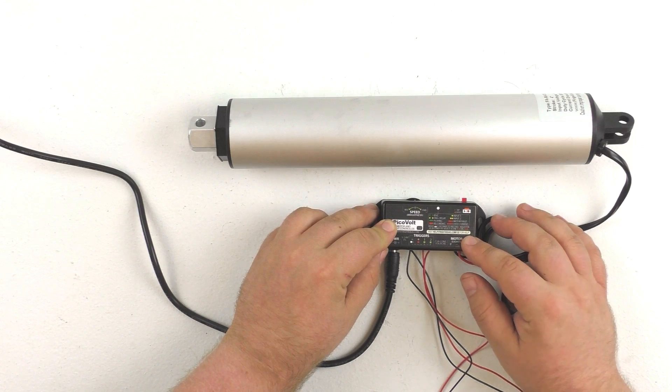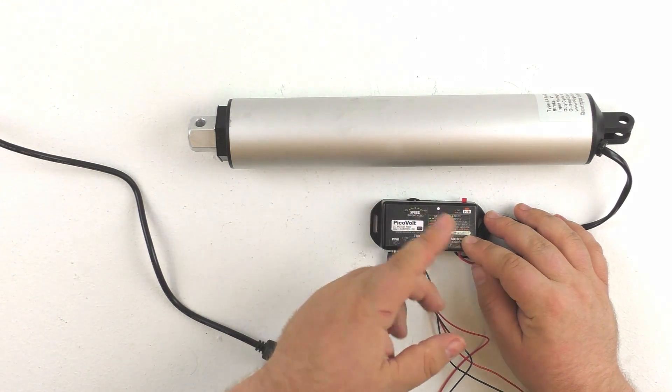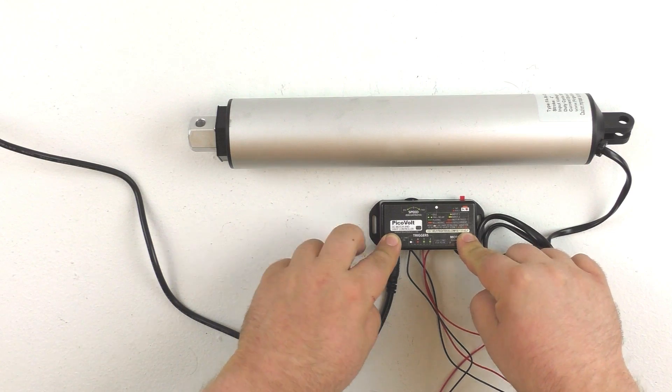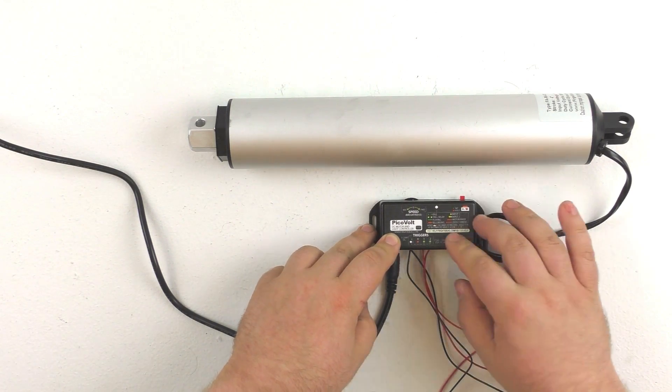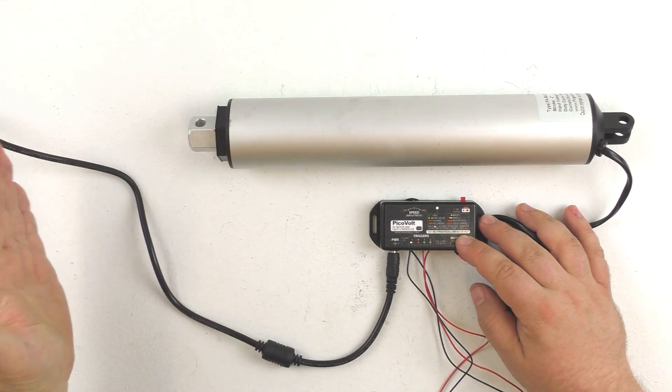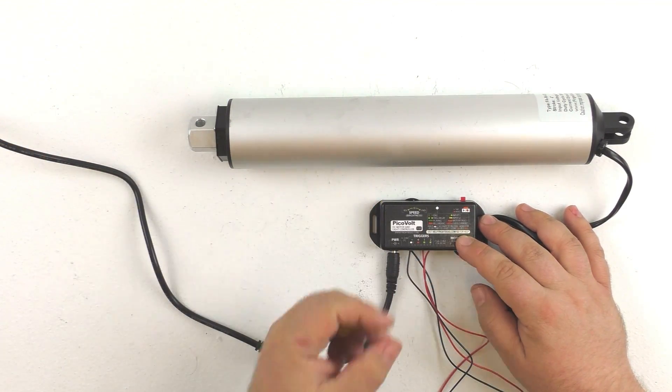The PicoVolt allows you to record animation so that you can actually trigger a sequence of extending and retracting but this year we've actually added a second trigger input so you can have two shows which is excellent for use with linear actuators because you can actually have one trigger extend the actuator and another retract it.